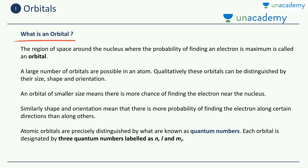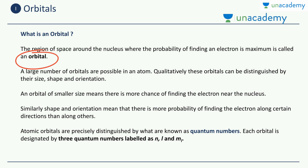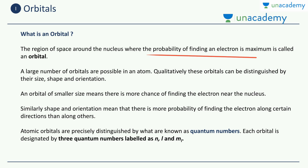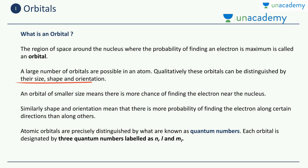What is an orbital and how is it different from an orbit? The orbital is the region or space around the nucleus where the probability of finding an electron is maximum — this region is called an orbital. A large number of orbitals are possible in an atom, as there can be various regions where the possibility of finding an electron is maximum. Qualitatively, these orbitals can be distinguished by their size, shape, and orientation. They can have different sizes, different shapes, and different orientations, but all of them share one quality: the probability of finding the electron is maximum in them.